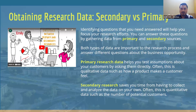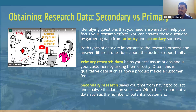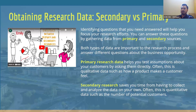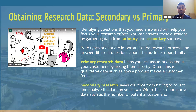Both sets of data are very important. Primary research helps you test your assumptions about your customers by asking them directly: What do you want? What do you need? What do you like or dislike? This qualitative data gives you information on how your customer feels about your product or service, so you can start quickly making adjustments.